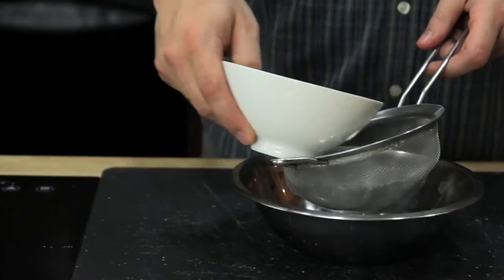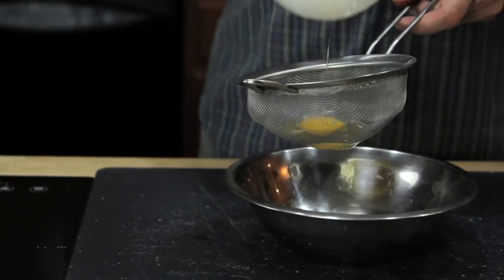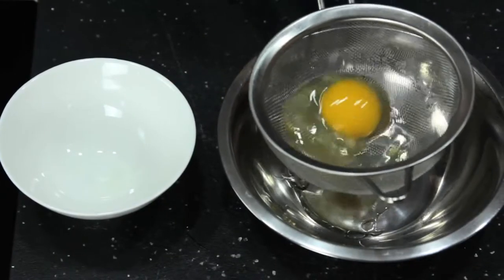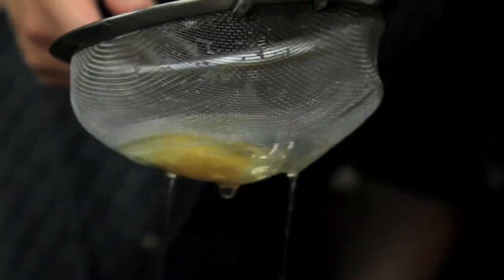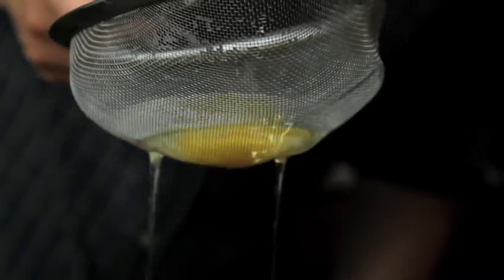It's this excess white that causes misshapen eggs. You know, those really ugly ones with the wispy white floaters that completely ruin your brunch. To get rid of them, we're going to transfer our eggs to a fine mesh strainer and gently swirl it around until all the excess white is drained away. What you're left with is a nice, tight egg.